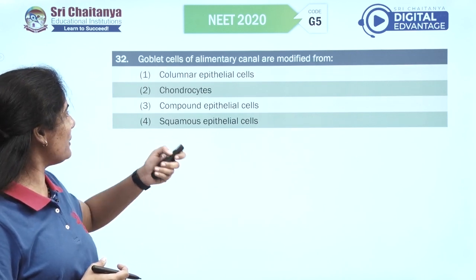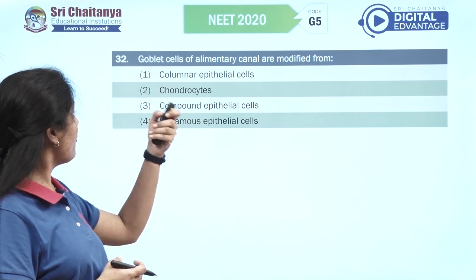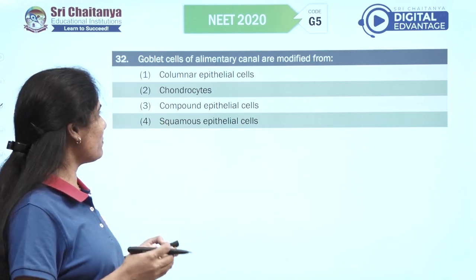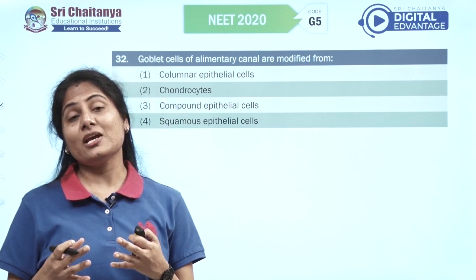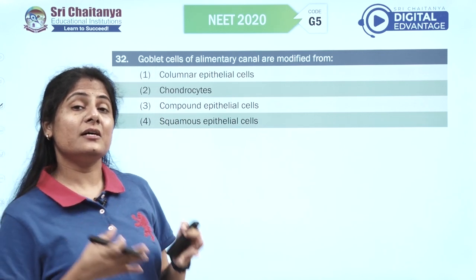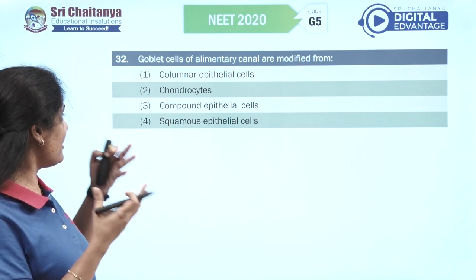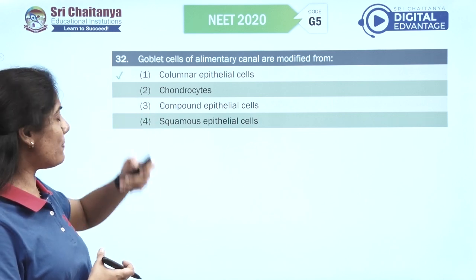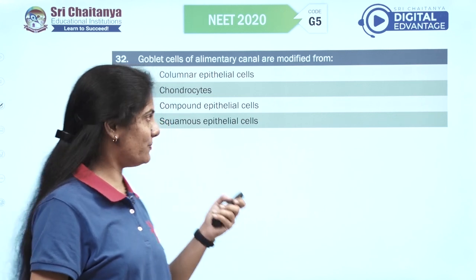Goblet cells of the alimentary canal are modified from — this is something you would have learnt from structural organization: columnar epithelium present in the stomach and intestine. So columnar epithelial cells is the right option.